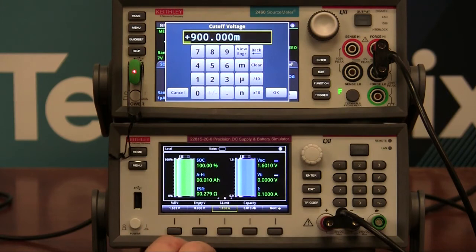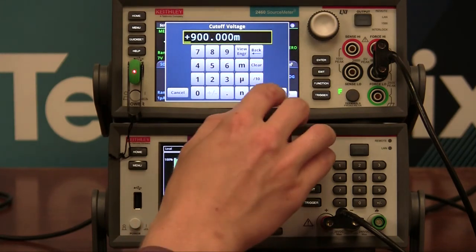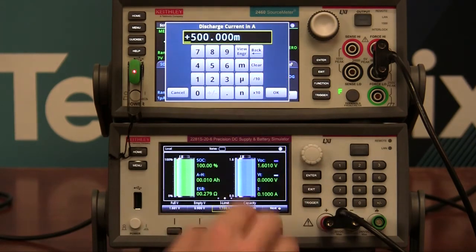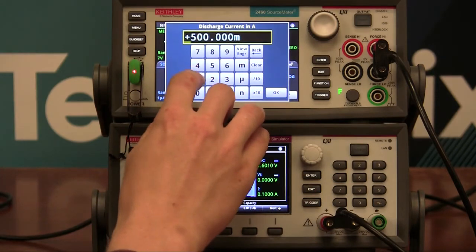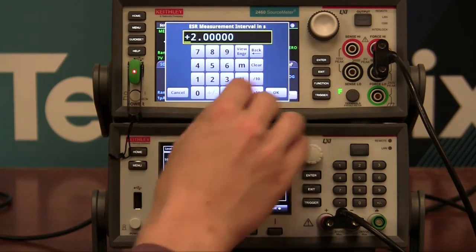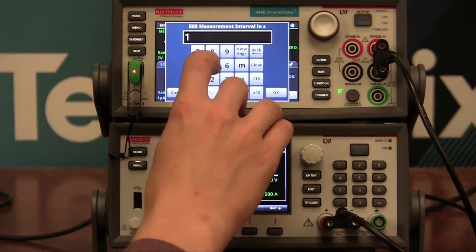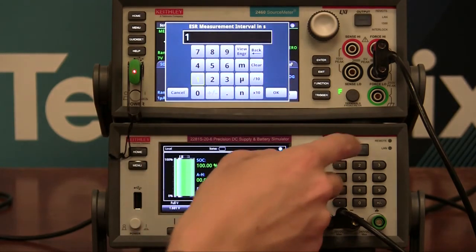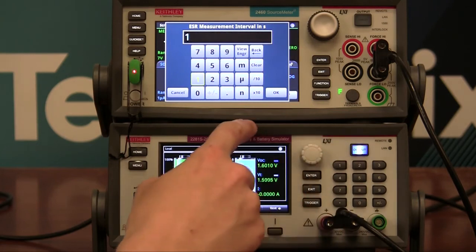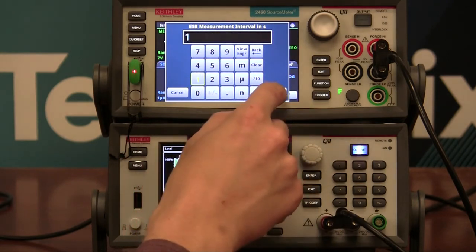The cutoff voltage in this model is 900 millivolts. We're going to discharge at 1 amp. And I'm going to take internal resistance measurements every 1 second. So now I can turn this on and get it ready to simulate. And press OK to start the model.